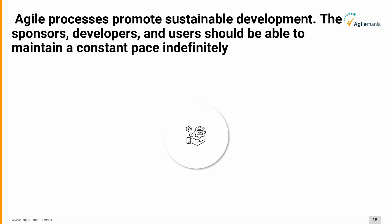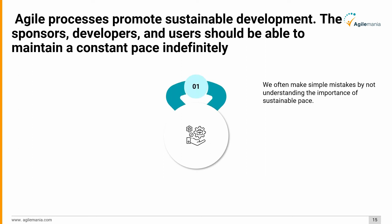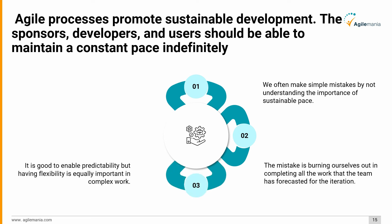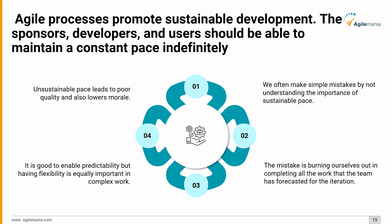The eighth principle in detail: agile processes promote sustainable development. Sponsors, developers, and users should be able to maintain a constant pace indefinitely. A common mistake is burning out in completing all the work forecasted for the iteration. It is good to enable predictability, but having flexibility is equally important in complex work. Unsustainable pace leads to poor quality and also lowers team morale.